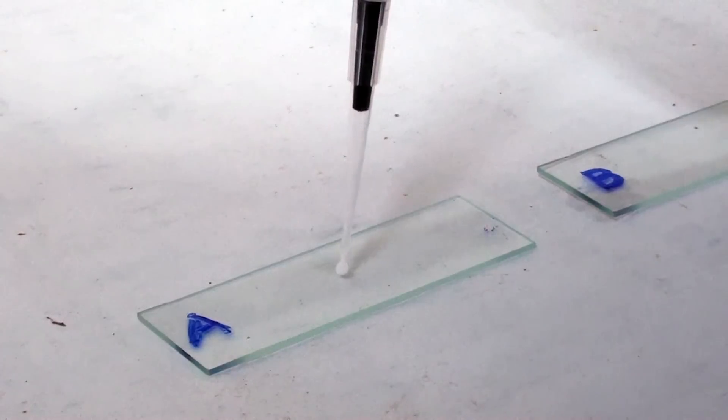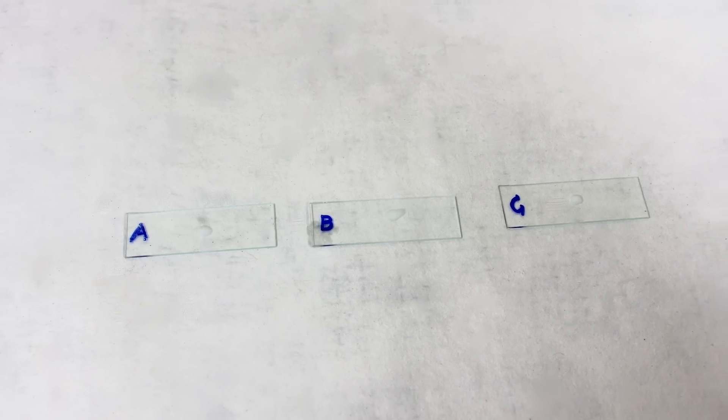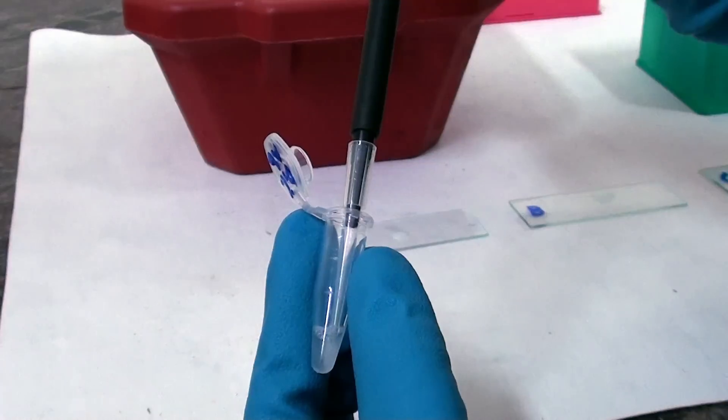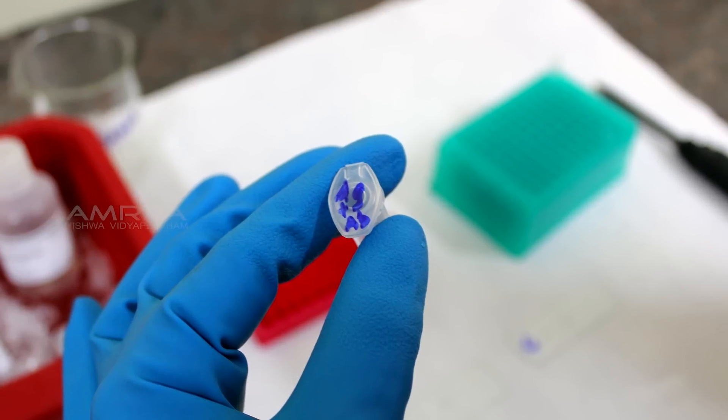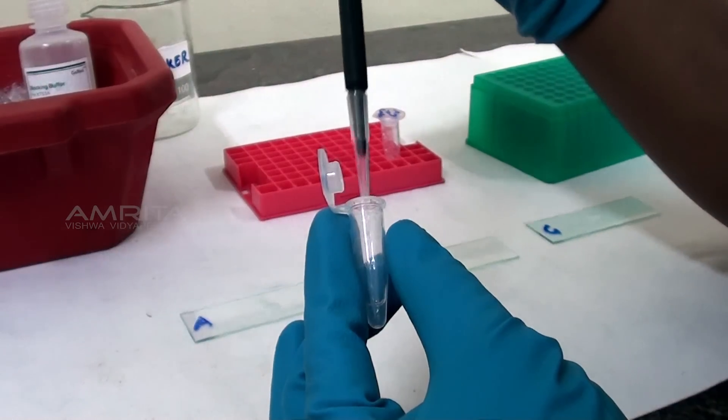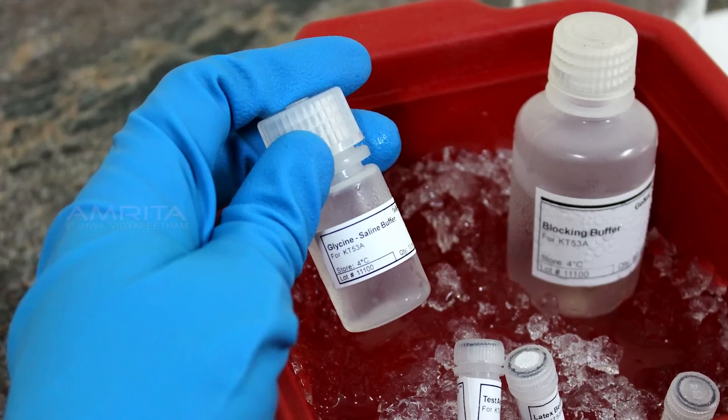Pipette 10 microliters of coated latex on a glass slide. Add 10 microliters of diluted antiserum to slide A. Add 10 microliters of antiserum mixed with the antigen from the above step to slide B.